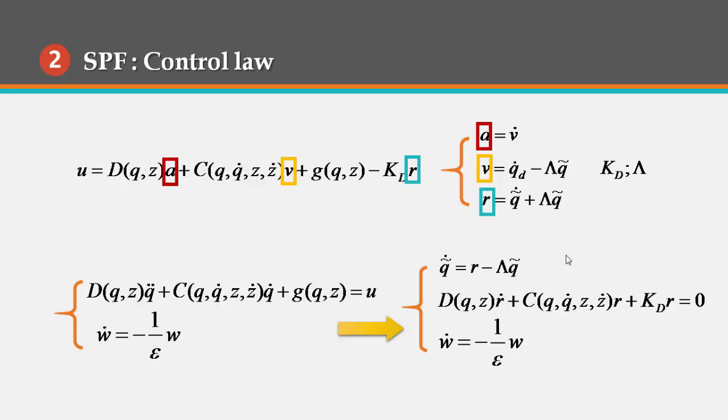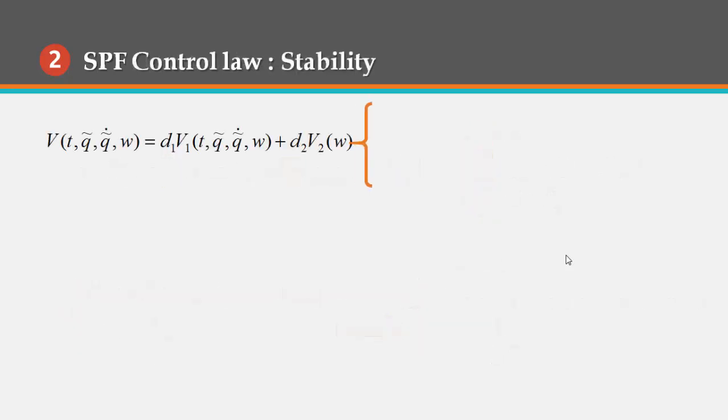For the resulted closed loop system, we choose the following Lyapunov function candidate, where d1 and d2 are positive coefficients and v1 and v2 have the following expressions respectively.